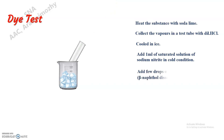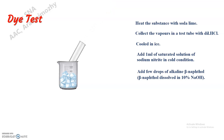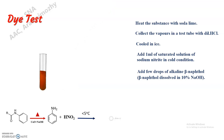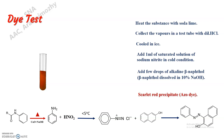After this, we have to add a few drops of alkaline beta-naphthol solution, also in ice cold condition. We can see here the formation of scarlet red dye — that is, the azo dye will be formed here. This indicates the presence of the anilide group.